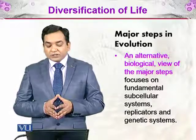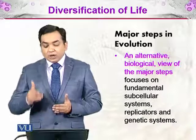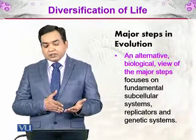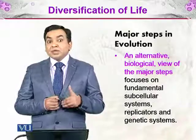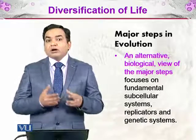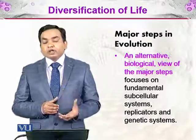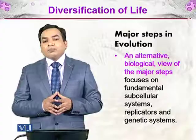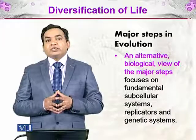An alternative biological view of major steps focuses on fundamental subcellular systems, replicators, and genetic systems. Subcellular systems means these systems were earlier than cells — they existed before cells were formed. Then came the replicators: organisms or entities that were replicating themselves. Then there are the genetic systems — for example, plants, animals, all five kingdoms, and viruses. Any organism that contains genetic material is called a genetic system. Through certain processes, all of these came into being and diversified this planet, teeming with the biodiversity we see today.